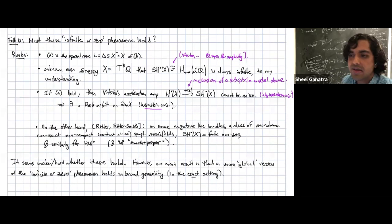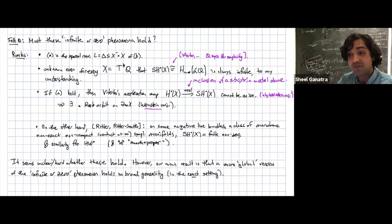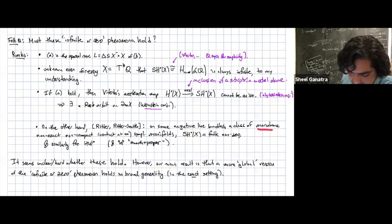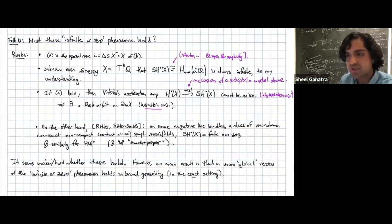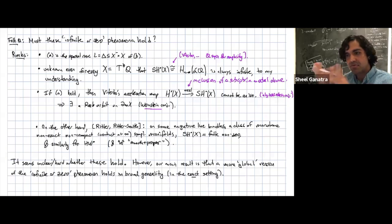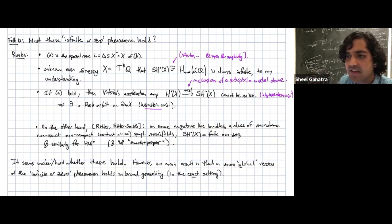On the other hand, in the non-exact case this alternative definitely fails in general. There are computations on negative line bundles by Ritter and Ritter-Smith — a class of monotone non-exact non-compact symplectic manifolds where symplectic cohomology is finite non-zero, and similarly for wrapped Floer homology. In fact the wrapped Fukaya category is smooth and proper. Whatever's going on, we haven't found an exact example where things aren't completely zero or infinite, but this fails in the non-exact setting.